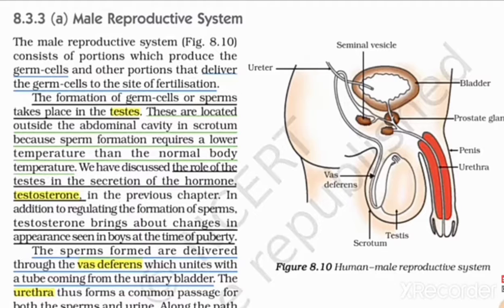Next, what is the function? The formation of germ cells — how does the formation of germ cells take place? These germ cells are also known as sperms. The sperms are produced in the testes.